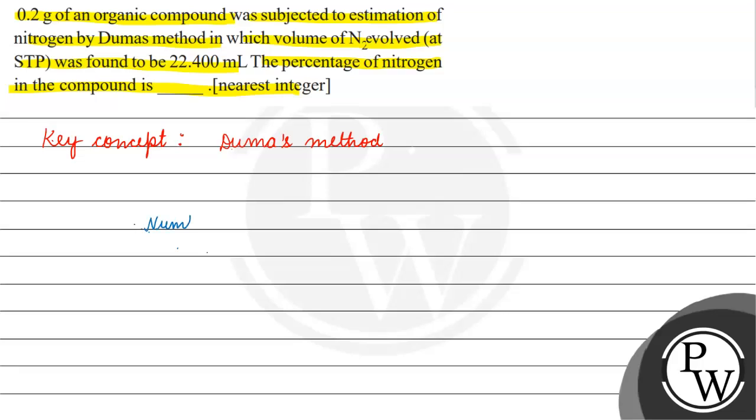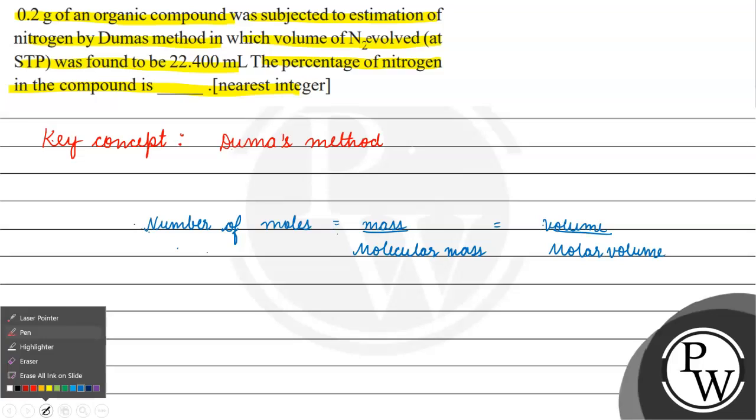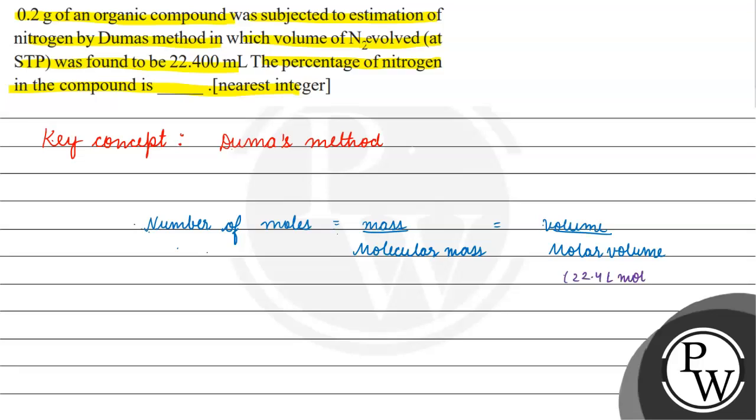If we use the formula, we can easily calculate the mass of nitrogen evolved at STP. Number of moles equals mass by molecular mass, and it is also equals to volume by molar volume. Molar volume is basically 22.4 liters per mole.